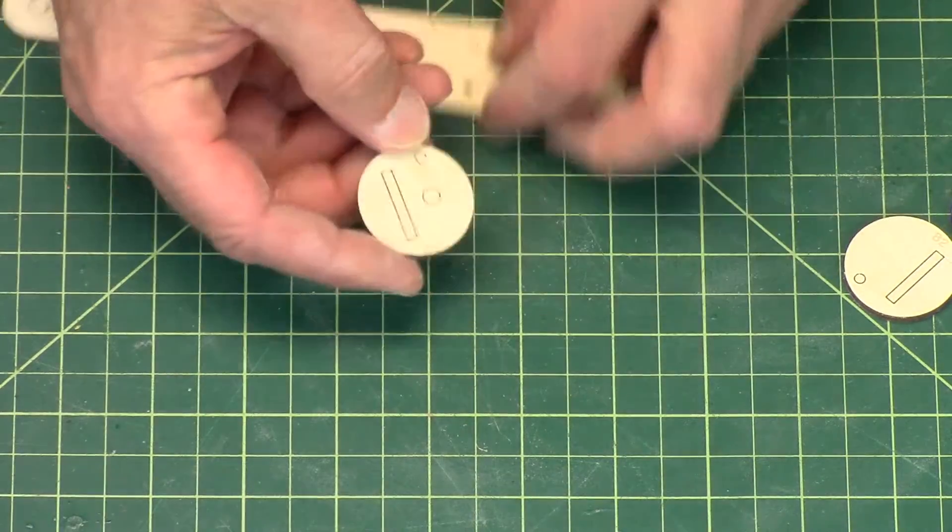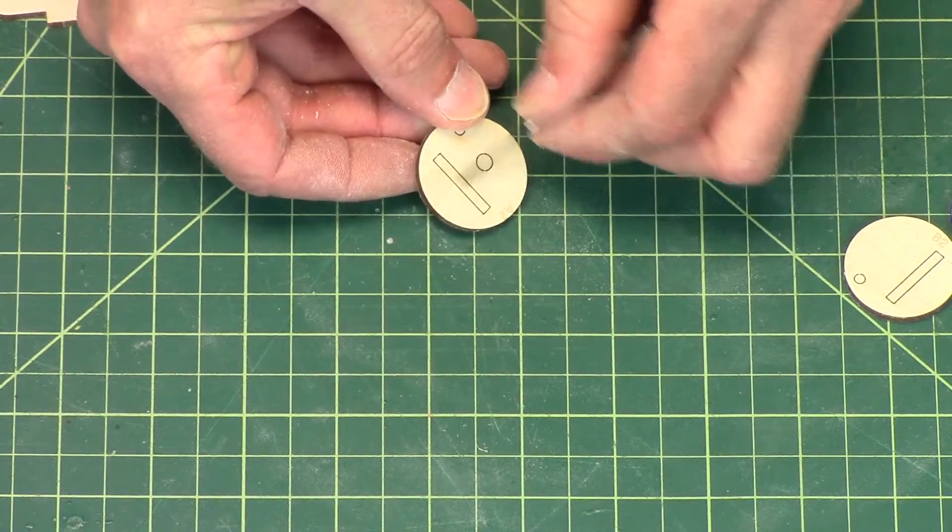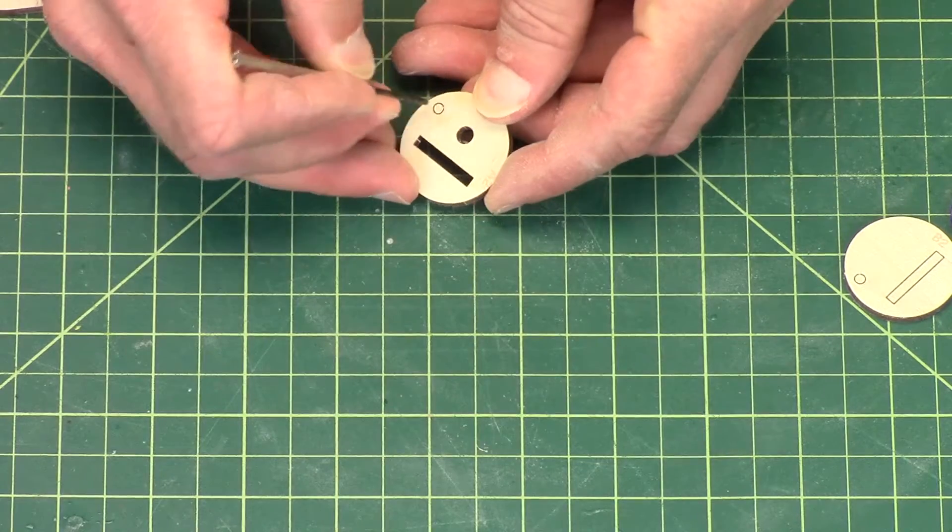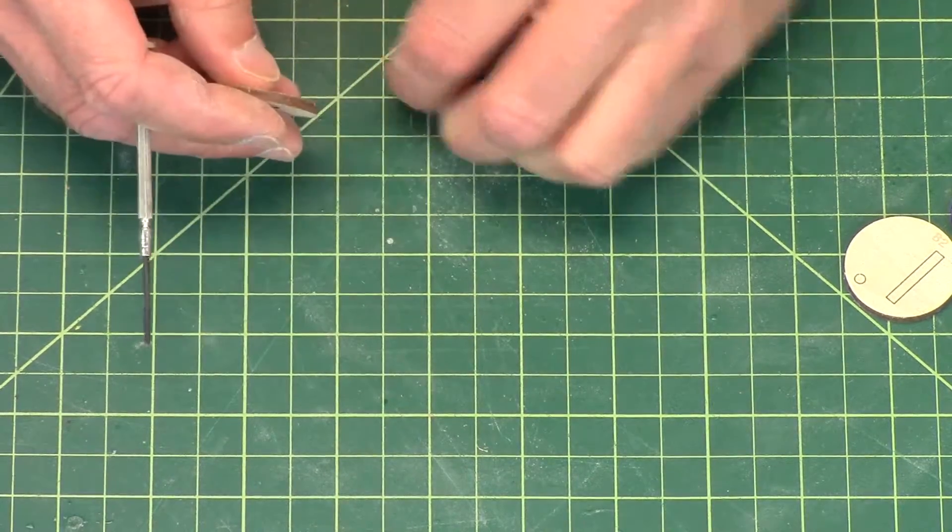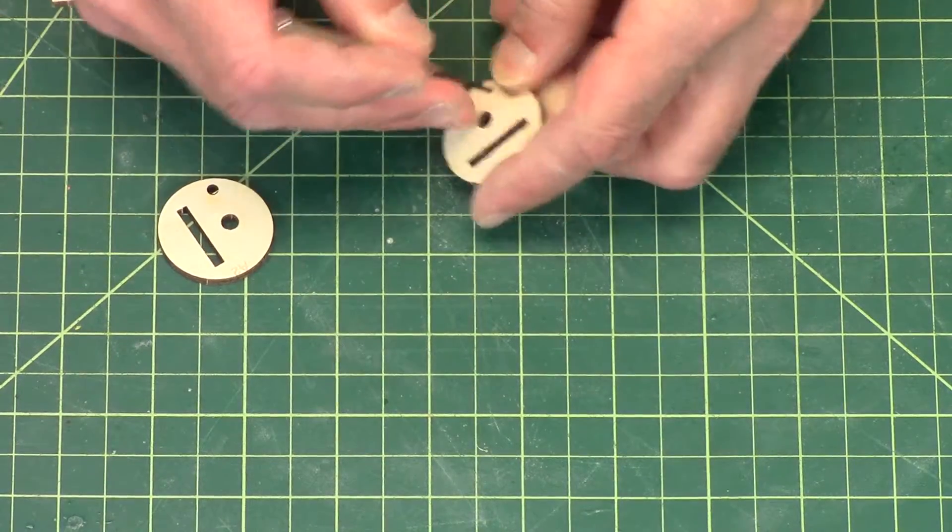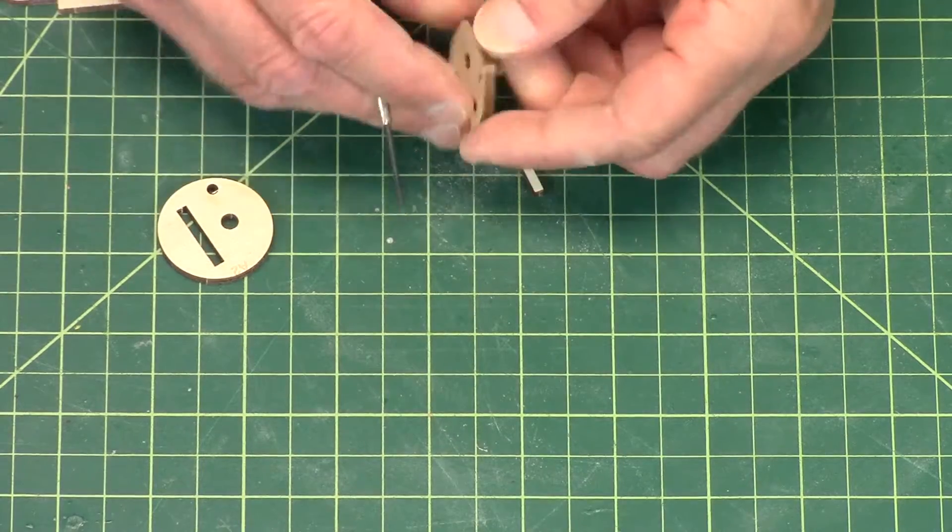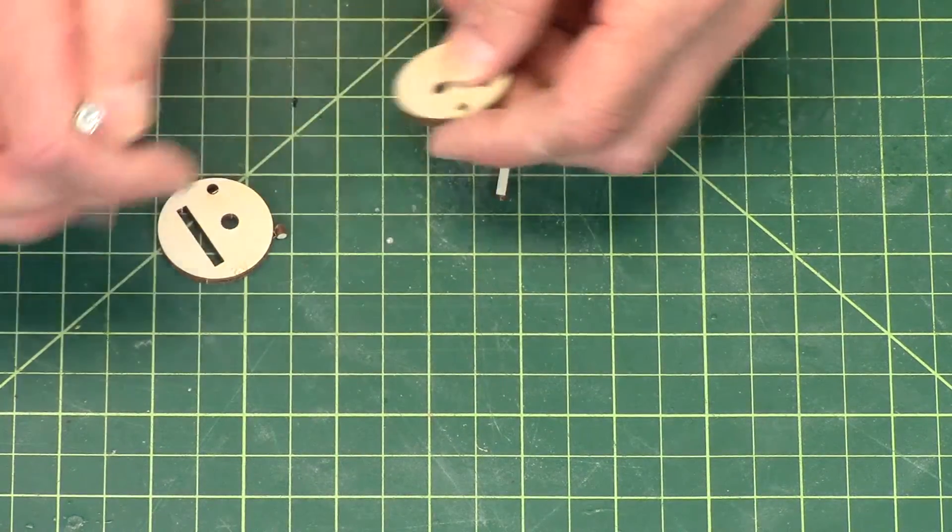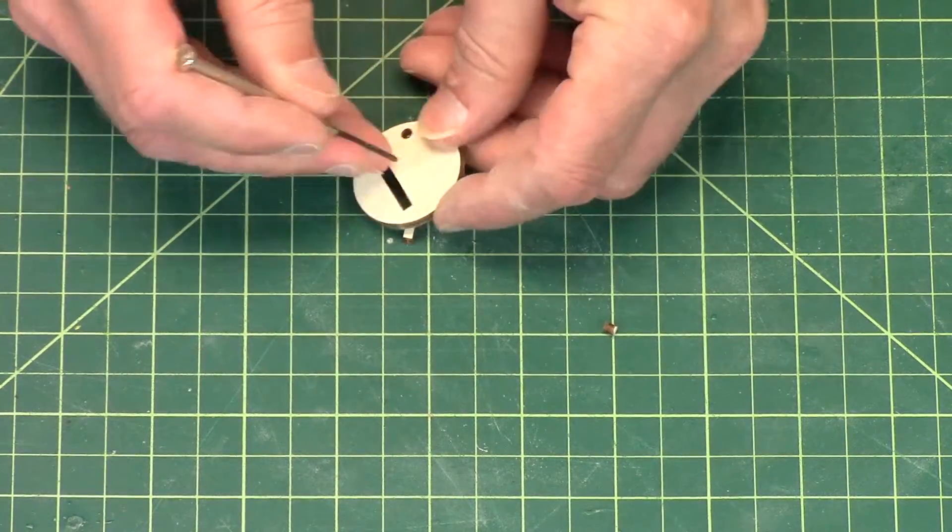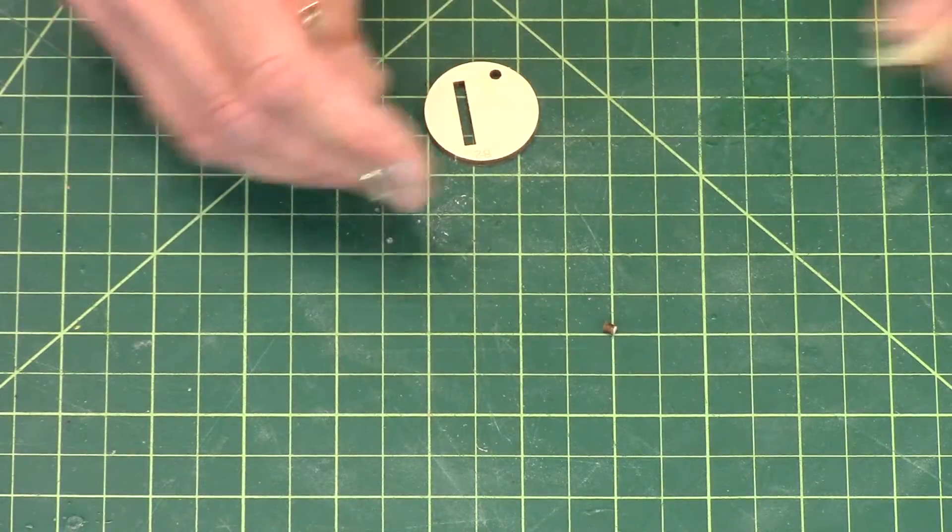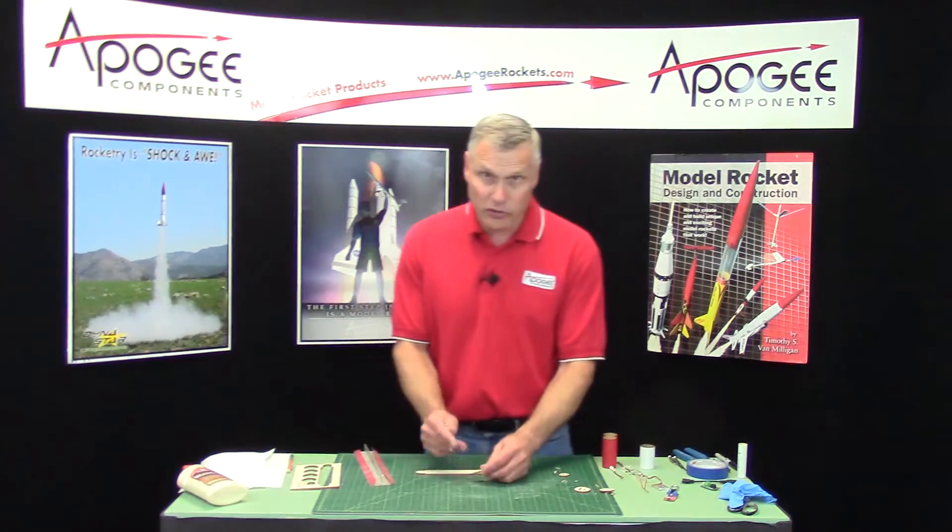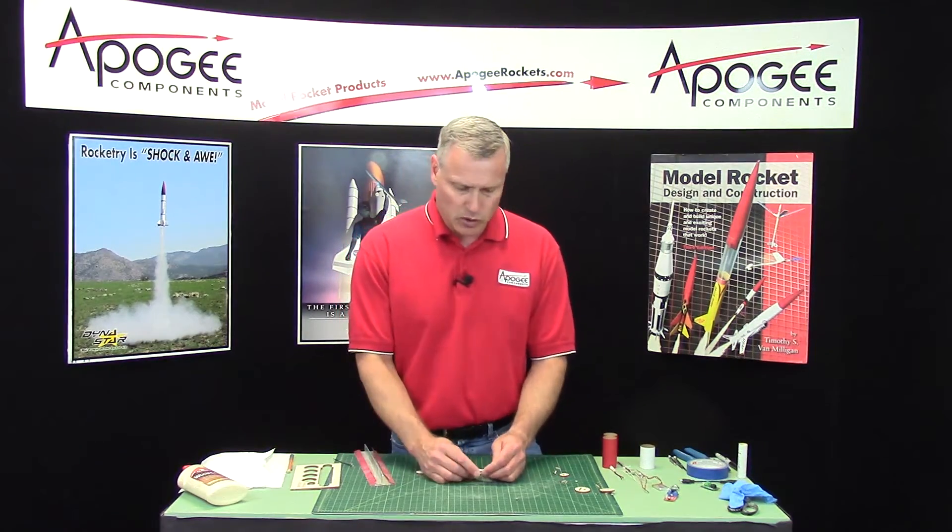On these little discs here, go ahead and pop out the little slots and the little holes. I'm just taking a little small screwdriver and just pushing hard on them. We'll discard that and keep the disc. You can also number them with a marker, and the instructions will tell you to do that.